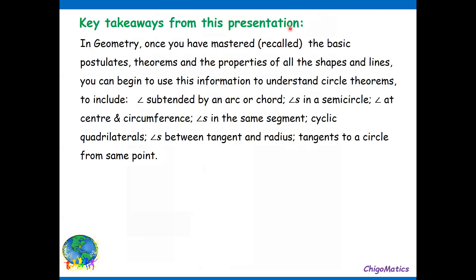Key takeaways from this presentation: In geometry, once you have mastered the basic postulates, theorems, and properties of all the shapes and lines, you can begin to use this information to understand circle theorems. To include angles subtended by an arc or chord, angles in a semicircle, angle at center and circumference, angles in the same segment, cyclic quadrilaterals, angles between tangent and radius, tangents to a circle from a point. They might not be all the properties from my presentation, but I think these are the most frequently used in Euclidean geometry.